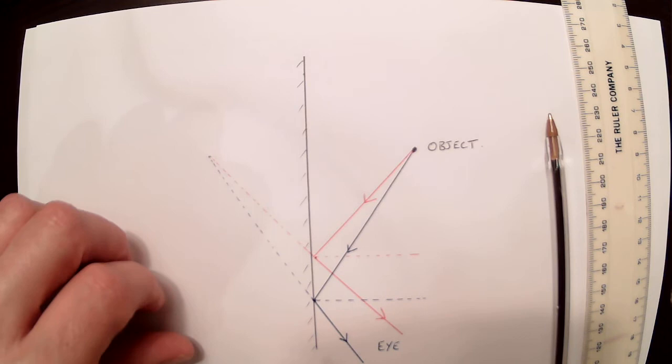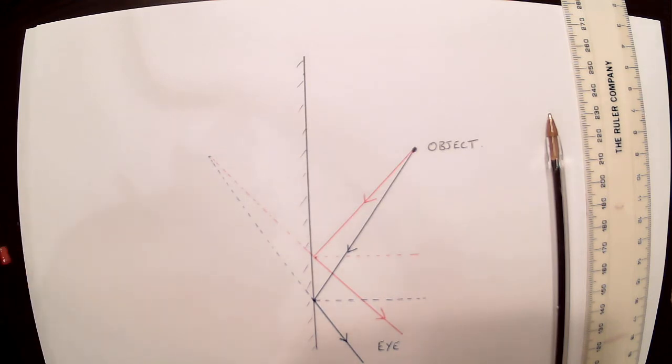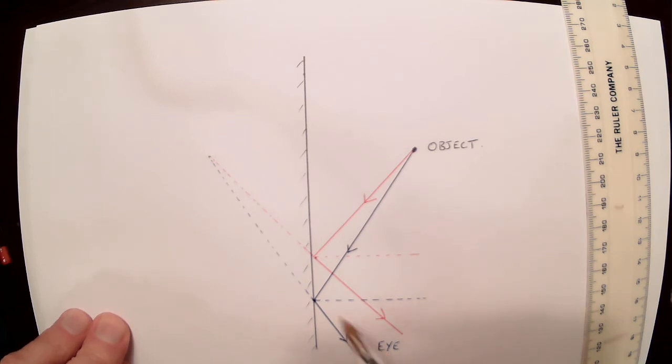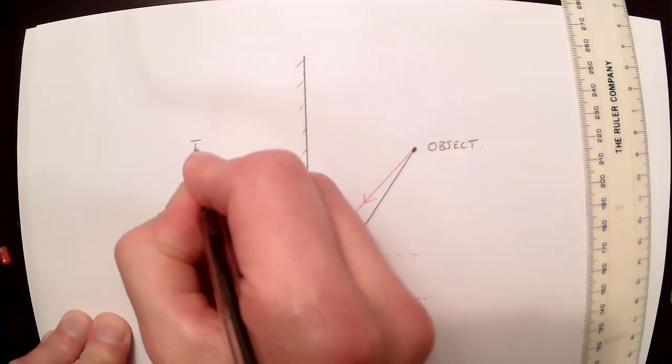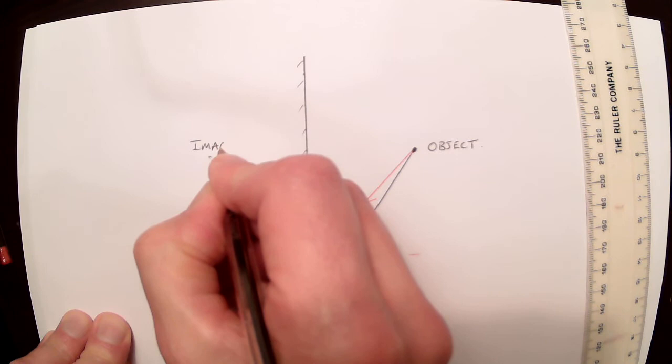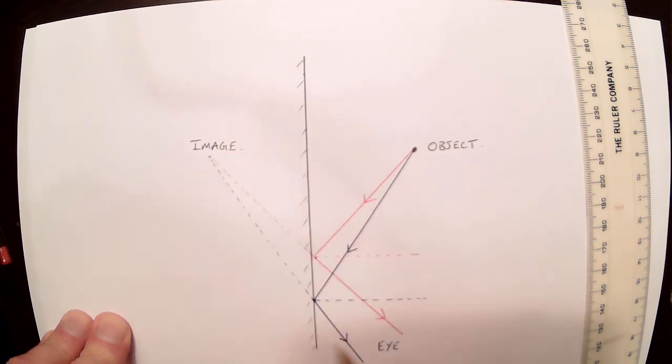Now, you'll notice I've used dashed lines. That's because those are not actual rays of light. They just appear to have come from there. The rays of light reflected off the mirror. If you were observing it here, you'd think that's where they have come from. So that is where the image is. The image is where the light appears to come from.